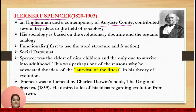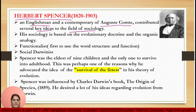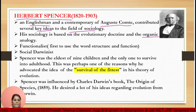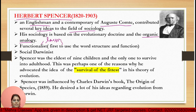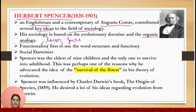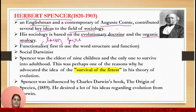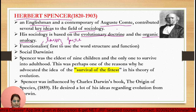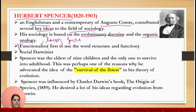Herbert Spencer gave many key ideas in the field of sociology. His key theories were: Organic Analogy Theory, Laissez-Faire Theory — which is the free market theory — and Evolutionary Theory. He also divided society into Industrial Society and Military Society. He was a functionalist thinker.